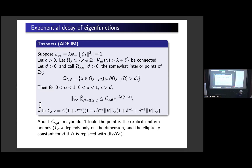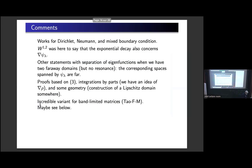The proof is similar to the standard proof with the usual potential — we just use the different energy formula. It relies essentially on integration by parts. You write L² estimates with a weight, choose the weight so that its gradient has size proportional to W (the Agmon weight), integrate by parts, and conclude that the function multiplied by a large exponential is still in L². It looks like a proof of Carleman-type inequality.